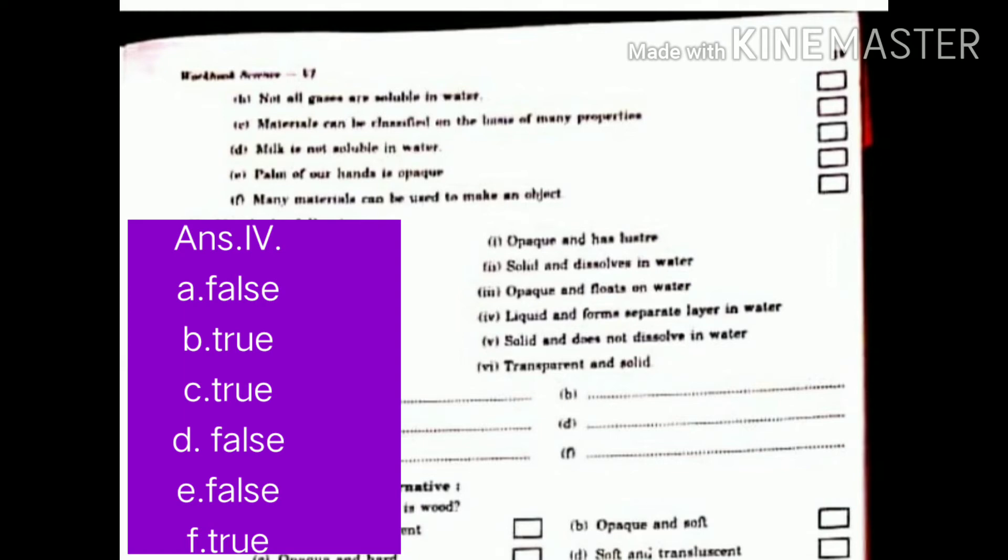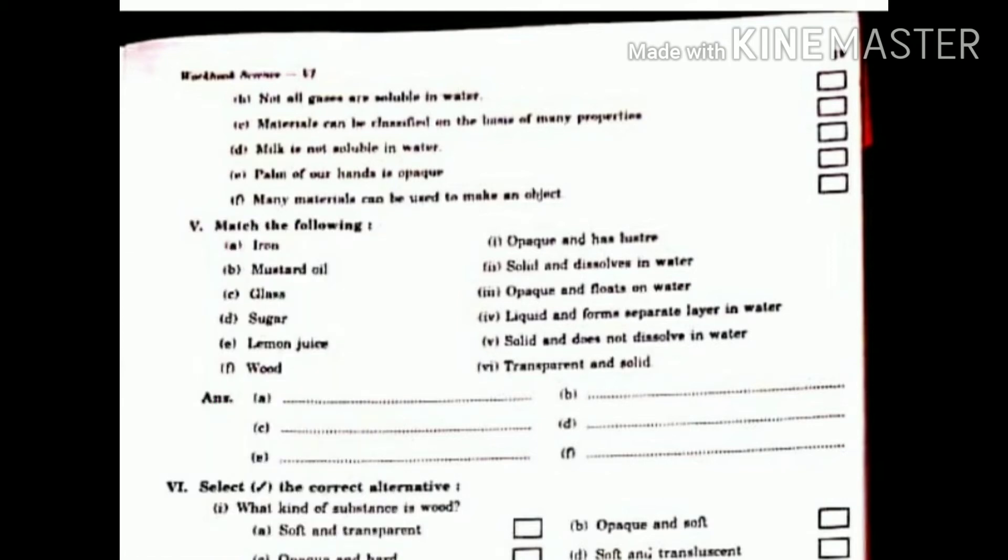D. Milk is not soluble in water. False. E. Palm of our hands is opaque. False. F. Many materials can be used to make an object. True.